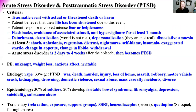Acute stress disorder and PTSD differ only in timeline: acute stress disorder is two days to four weeks after a traumatic event, then it becomes PTSD. In this disorder, a traumatic event with actual or threatened death or harm occurs. Key point: the patient believes their life is now shortened because of this event, and their response included intense fear or helplessness.